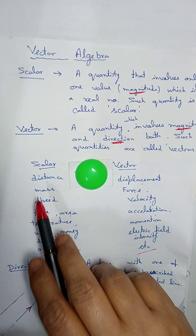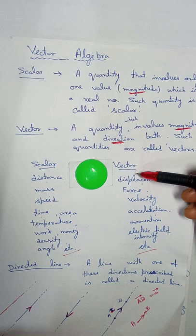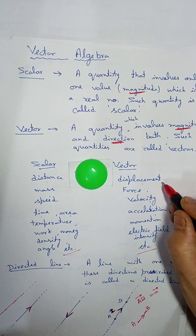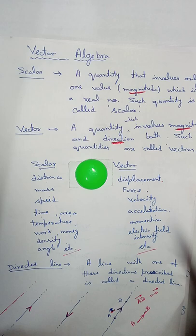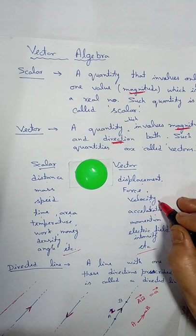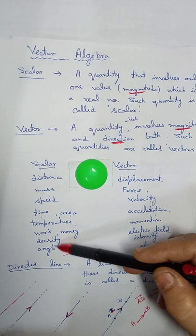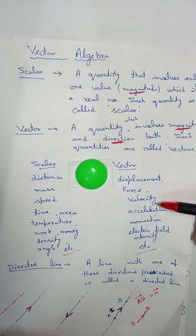Taking an example of scalar: distance and mass are scalars. But in vector, it is displacement and force — because displacement has magnitude and direction both, and force is always applied in a particular direction. Speed has only magnitude, but in the case of velocity we need direction also. Other scalar examples: time, area, temperature, work, money, density, angle. Vectors include force, velocity, acceleration, momentum, electric field, etc.